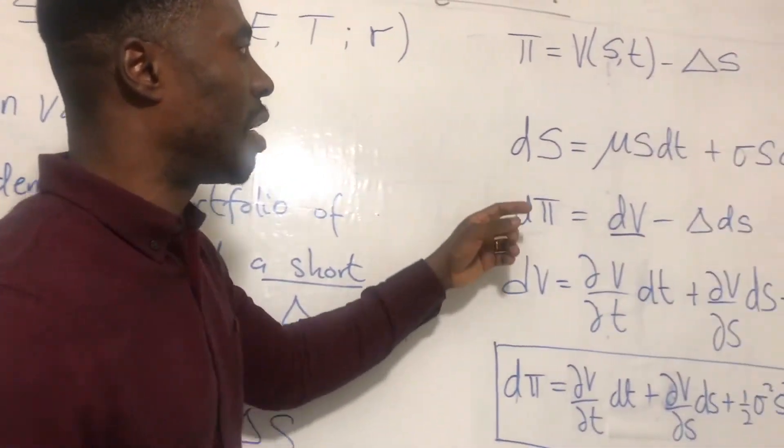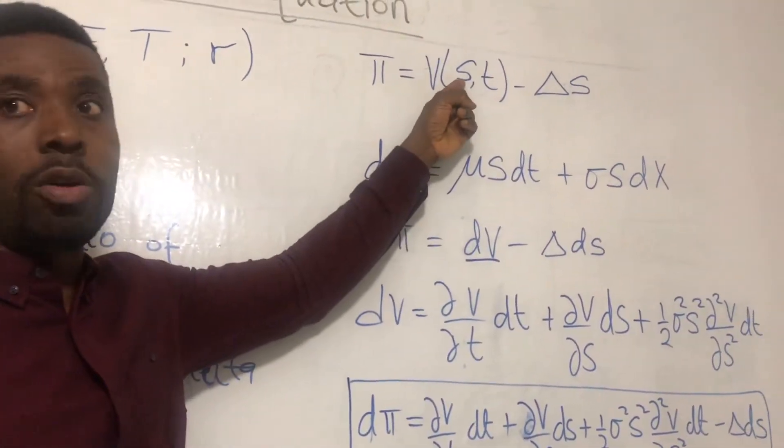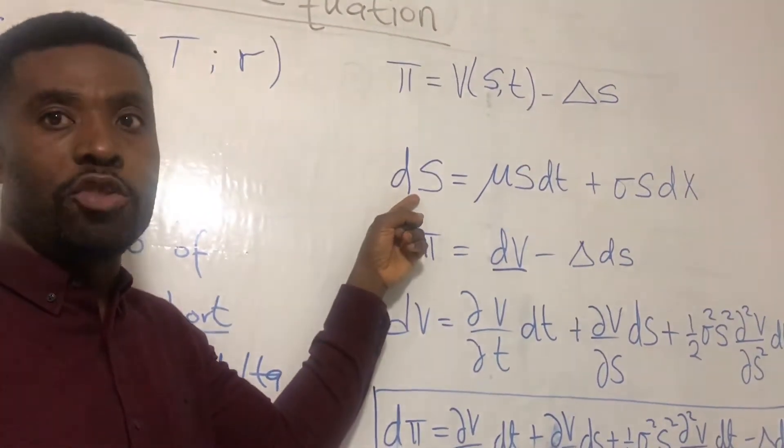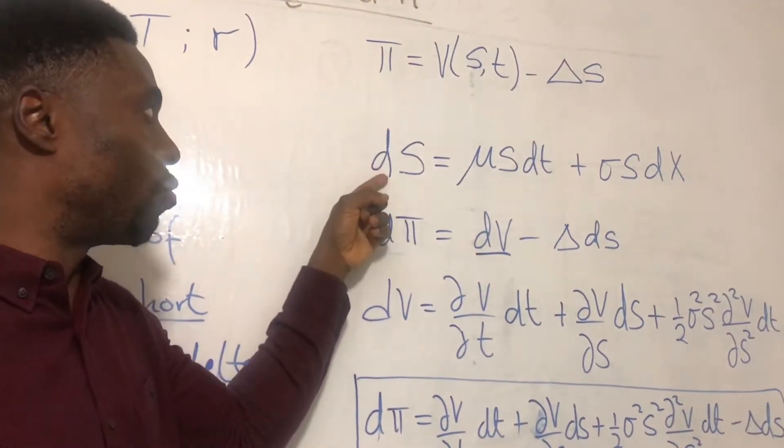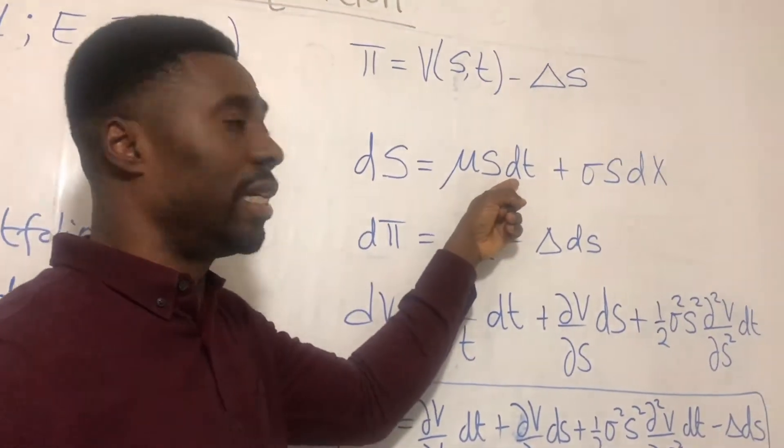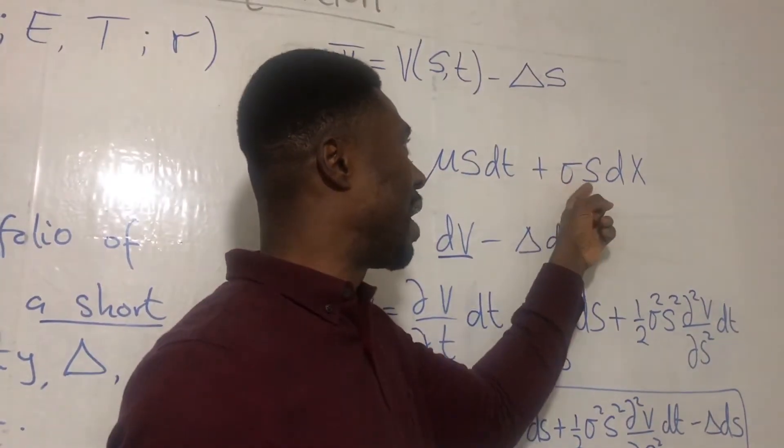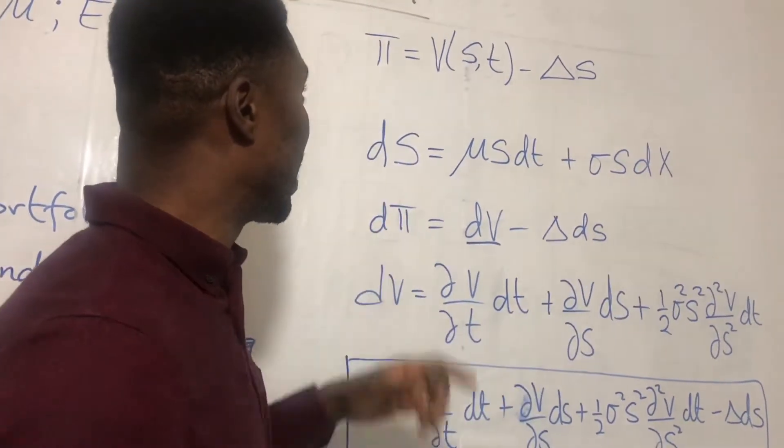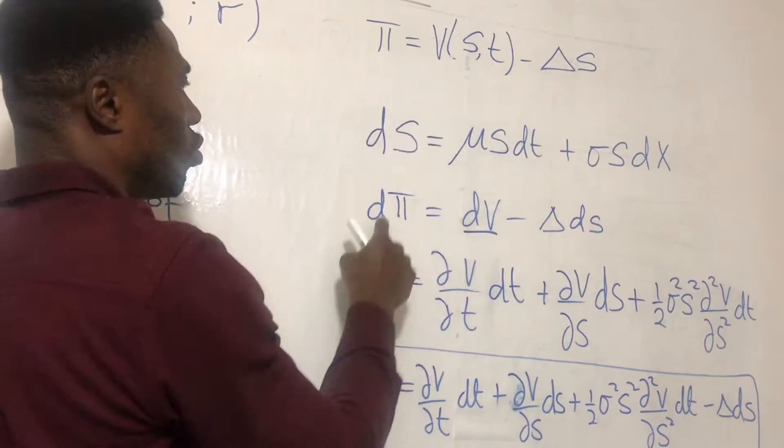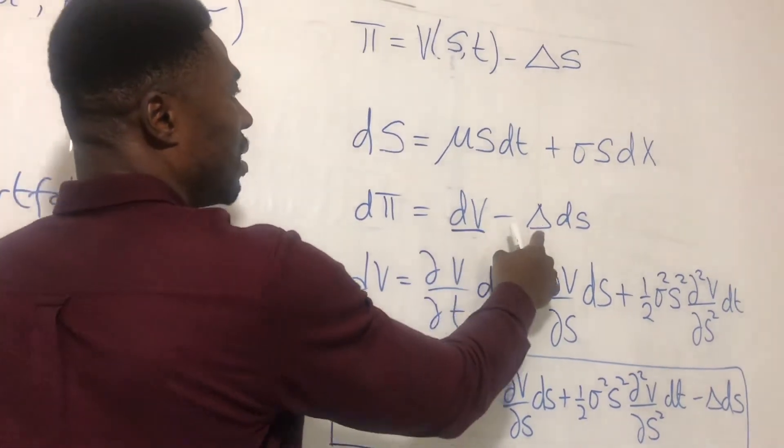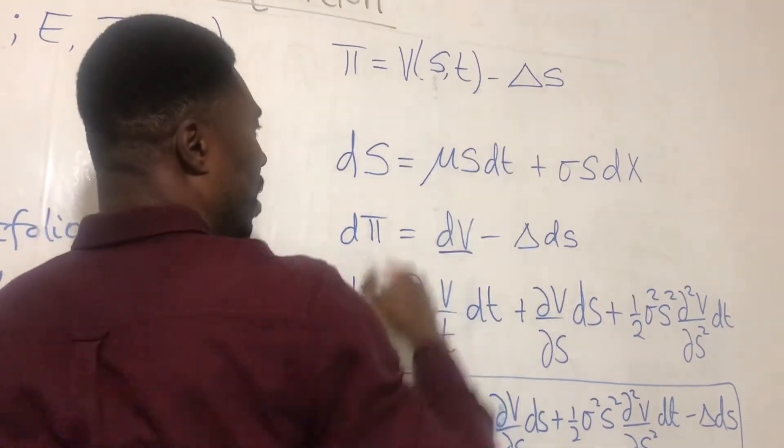We also make an assumption that the underlying stock S follows a geometric Brownian motion. And for that matter, dS will be giving us μS dt plus σS dz. We then get dπ from here to be equal to dV minus delta dS. This is from just what we have from π.